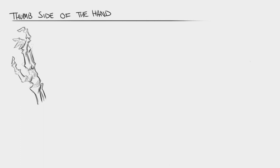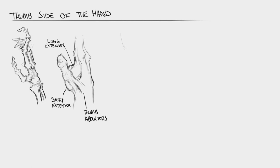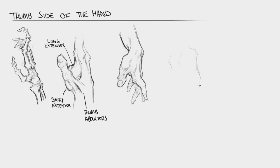When we look at the thumb side of the hand we can see that bulky first dorsal interosseous muscle as well as the thenar eminence on the underside. There's a group of muscles known as the thumb extensors which are on the latter portion of the forearm. Their tendons create a triangular depression on the wrist as they span from the forearm all the way down to the thumb. If you look at the wrist, you can see a couple sets of lines — one that corresponds to the carpal tunnel tendons and another set that corresponds to those thumb extensors. I also like to exaggerate that plane shift that occurs at the thumb knuckle by exaggerating the sharpness of that shape and having it change in value.